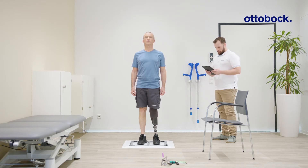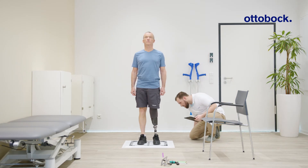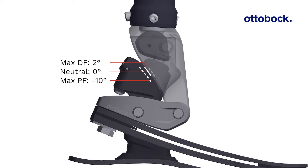The recommendation for static alignment is that the user should feel balanced from front to back. Additionally, check the angle indicator lines. The lines should show that the ankle is in the neutral position and that it is not at the dorsiflexion or plantar flexion stop.